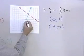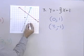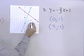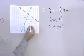Let's see how we've done here. x is 0, y is 1. That's that point. x is 1, 2, 3, y is negative 1. That will be that point right there.